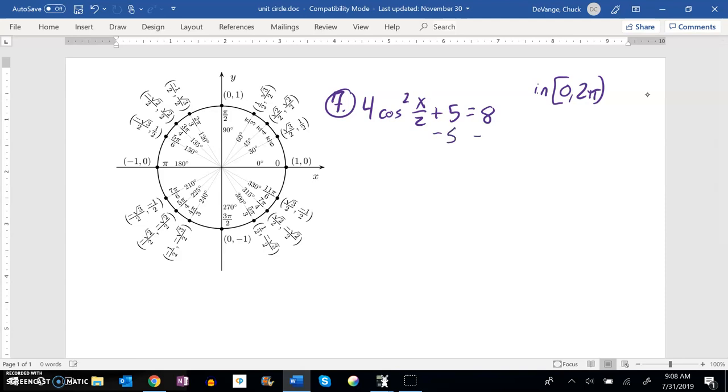First thing I'm going to do is subtract 5 from both sides, then divide by four. And now I have cosine squared, so I'm going to square root both sides.